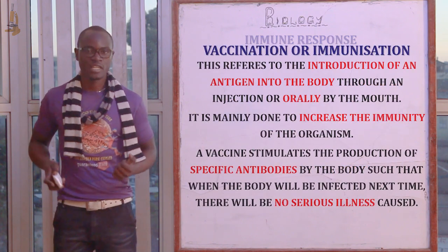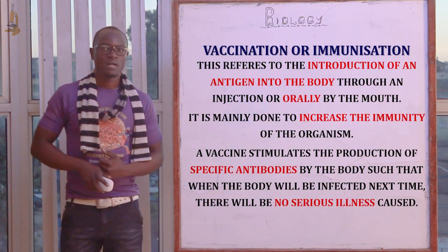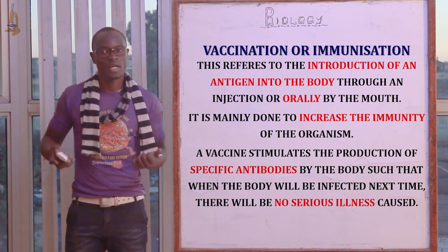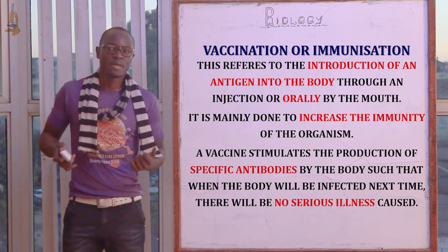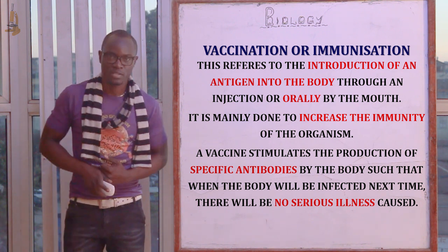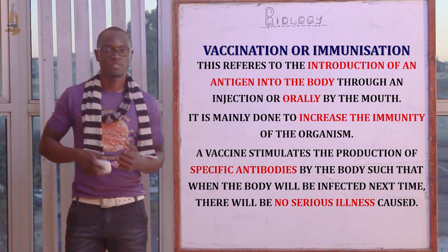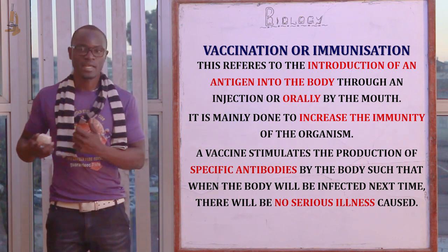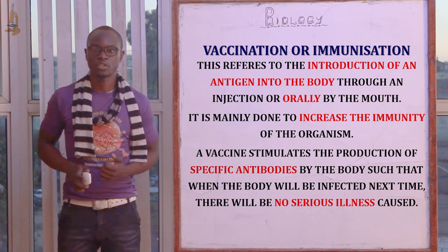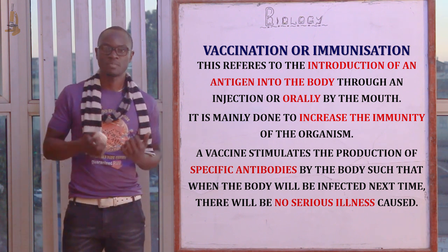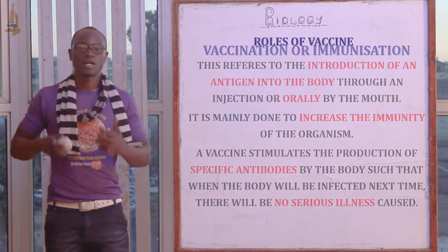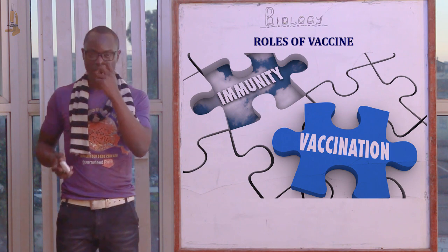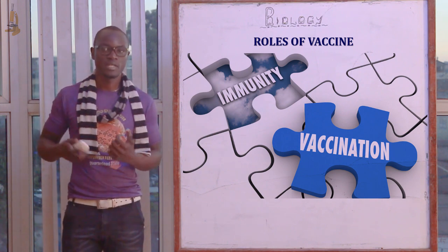Vaccination or immunization is the introduction of an antigen into the body through injection or orally by mouth, and is mainly done to increase the organism's immune response. Vaccines stimulate the production of specific antibodies so that when the body is infected next time, there won't be any serious infection. Let's look at the importance of vaccines and examples of immunizable diseases.